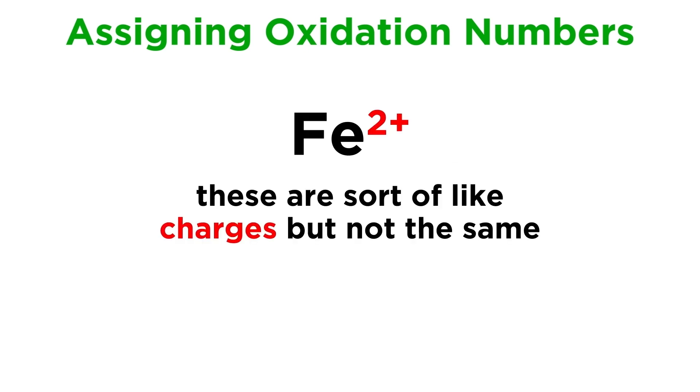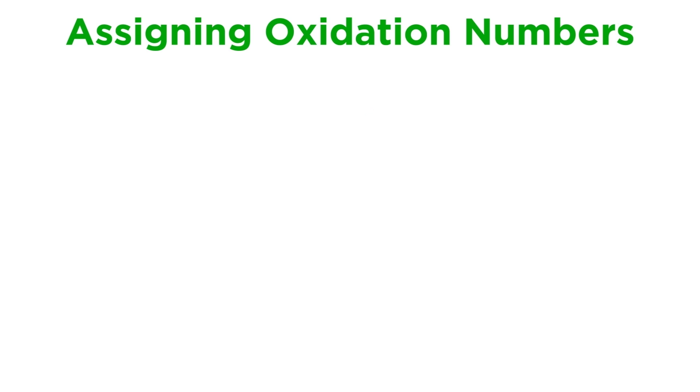Now let's learn how to assign oxidation numbers to a substance. These are sort of like electrical charges, but they aren't actually formal charges, they just describe the way electrons are arranged around an atom.